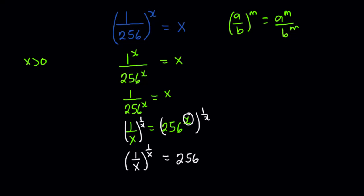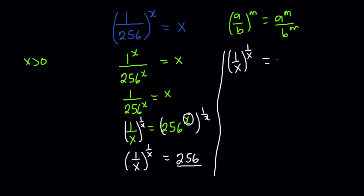For the sake of a principle I'm going to apply, I'll simplify 256 such that it is a number raised to an exponent of itself. So (1/x)^(1/x) = 4^4, because 4^4 gives us 256.